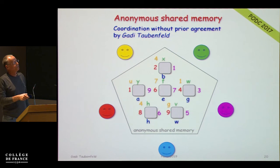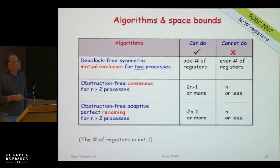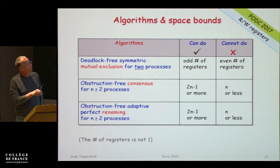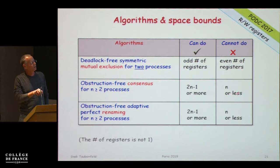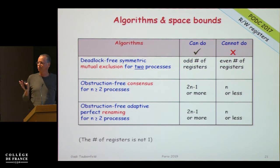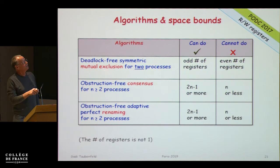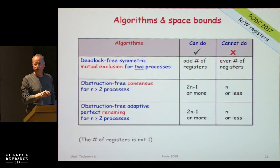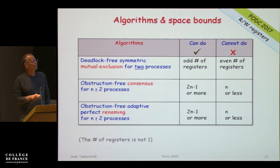Looking at classical problems — mutual exclusion, consensus, and renaming — for consensus and renaming we have algorithms and matching lower bounds. Mutual exclusion was more interesting. For two processes only, you can solve it if the number of anonymous registers is odd; if the number is even, you cannot solve the problem — you cannot break symmetry.